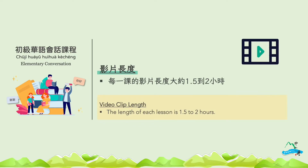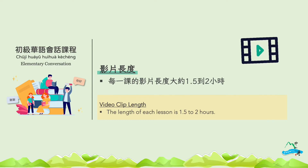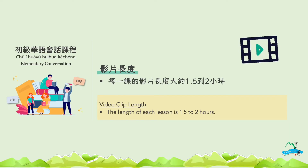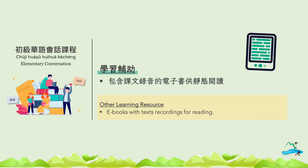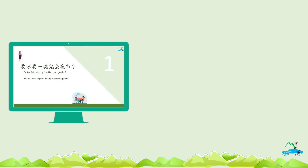每一课有六到七支影片，每支影片十到十五分钟，一课的影片加起来大约是一个半小时到两个小时。There are six to seven videos in a lesson, lasting 10 to 15 minutes each. The length of each lesson is one and a half to two hours. 我们制作了电子书，同时附上课文的录音档，可以自己阅读、运用。We have an e-book with recordings of the texts that you can read and use. 下面介绍的是每一课的学习内容。The following is a description of what you will learn in each lesson.